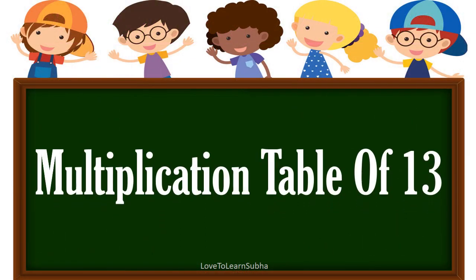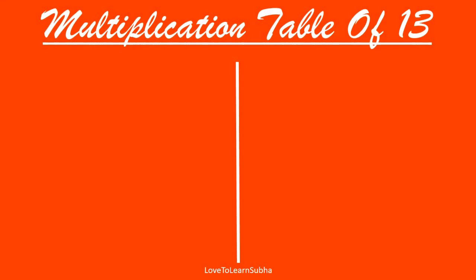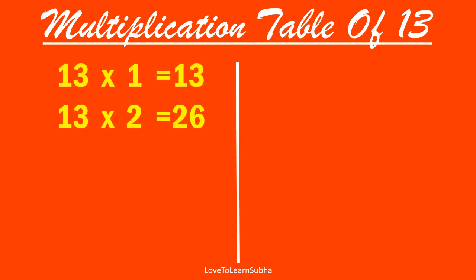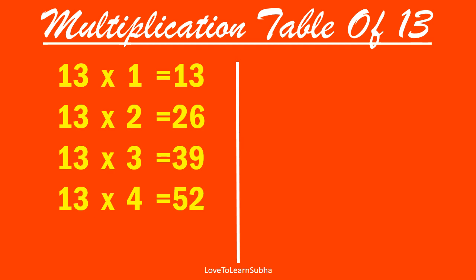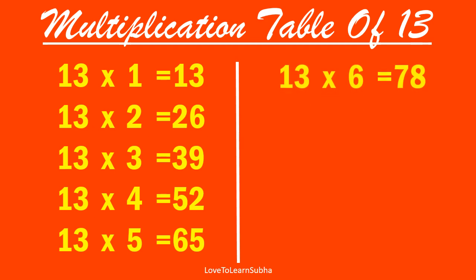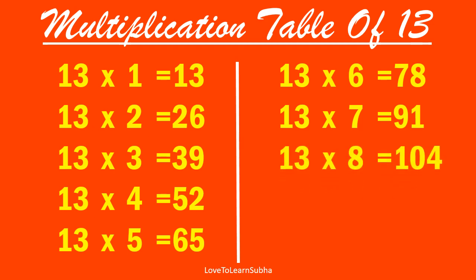Multiplication table of 13. 13×1 is 13, 13×2 is 26, 13×3 is 39, 13×4 is 52, 13×5 is 65, 13×6 is 78, 13×7 is 91, 13×8 is 104, 13×9 is 117.